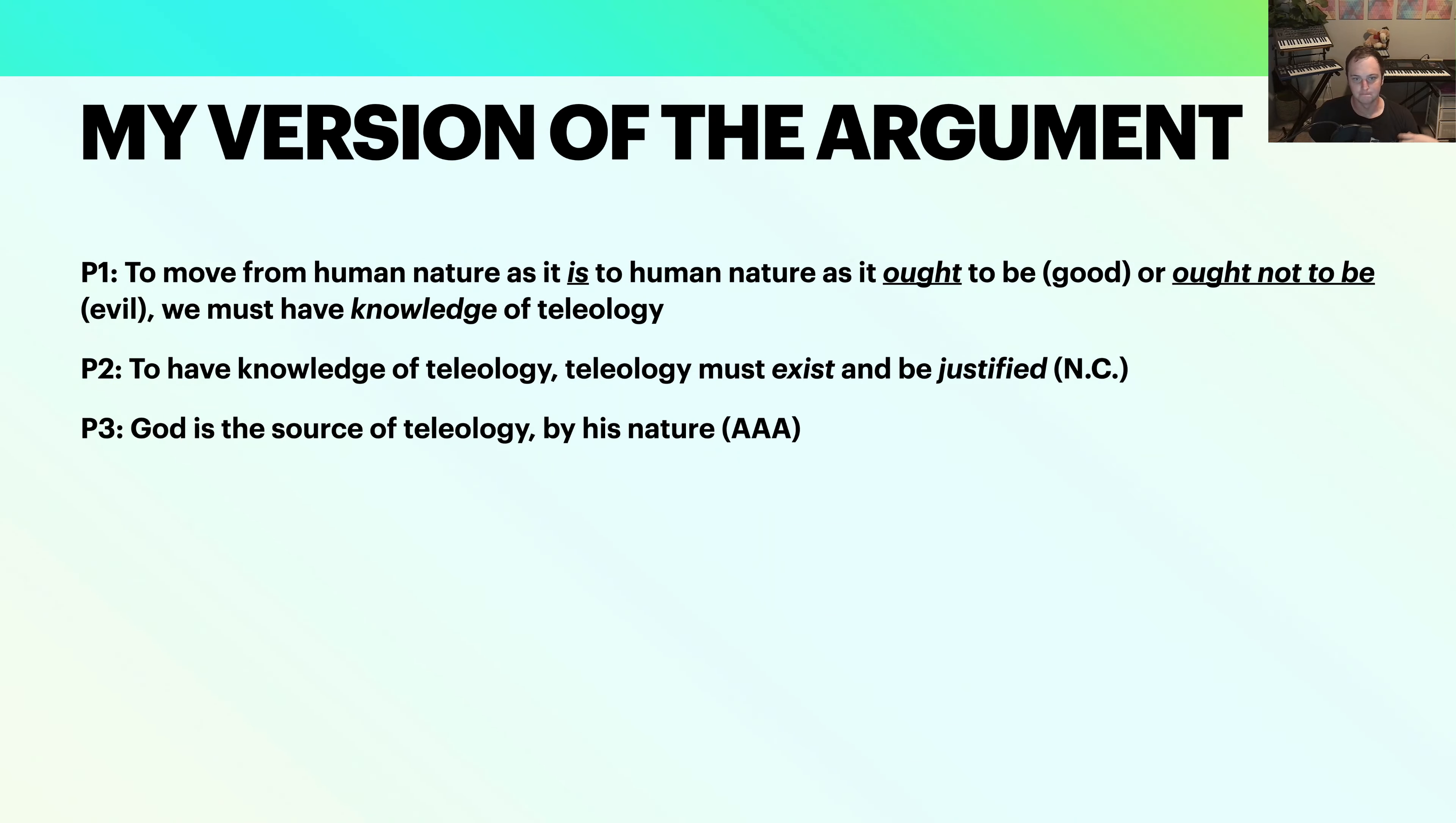I'm trying to avoid the Gettier problem, so I'm not saying these things are sufficient, but I'm saying they're at least necessary to have knowledge of teleology. Teleology must exist and must be justified. So this is taking Plato's idea, justified true belief, so it's at least necessary. God is the source of teleology. This is premise three, by his nature. And I say the AAA condition—this isn't the car towing company. By AAA, it was Augustine, Aquinas, and Anselm, who the three of those actually all thought that God's nature was basically the source of good.